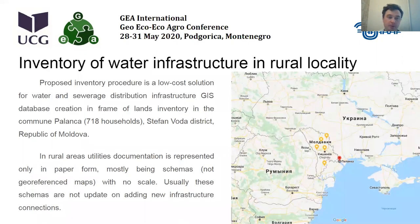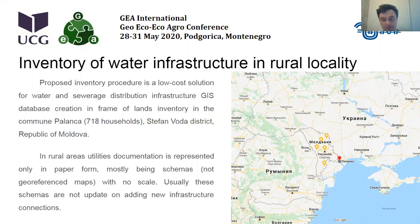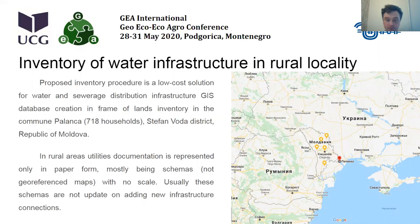The proposed inventory procedure is a low-cost solution for water and sewerage distribution infrastructure basic GIS database creation. It was done in the frame of land inventory in the community of Palanka — 780 households, Stefan Voda district, Republic of Moldova. In rural areas, utilities documentation is represented only in paper form, mostly being schemas — not georeferenced maps, with no scale. Usually these schemas are not updated when new infrastructure connections are added.